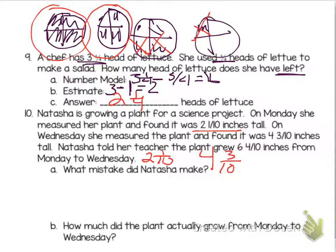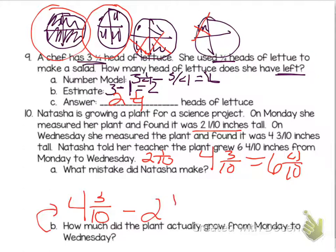Number 10. Natasha is growing a plant for a science project. If you add 2 and 4 together you get 6, and 1 and 3 is 4 tenths. So she added her two measurements. That's her mistake. She should not have added those two measurements. How much did her plant actually grow from Monday to Wednesday? To figure out how much it grew I need to subtract. Her mistake was adding them together. She shouldn't have done that. So really her plant 4 and 3 tenths minus 2 and 1 tenths equals 4 minus 2 is 2, 3 minus 1 is 2. So her plant actually grew 2 and 2 tenths inches.